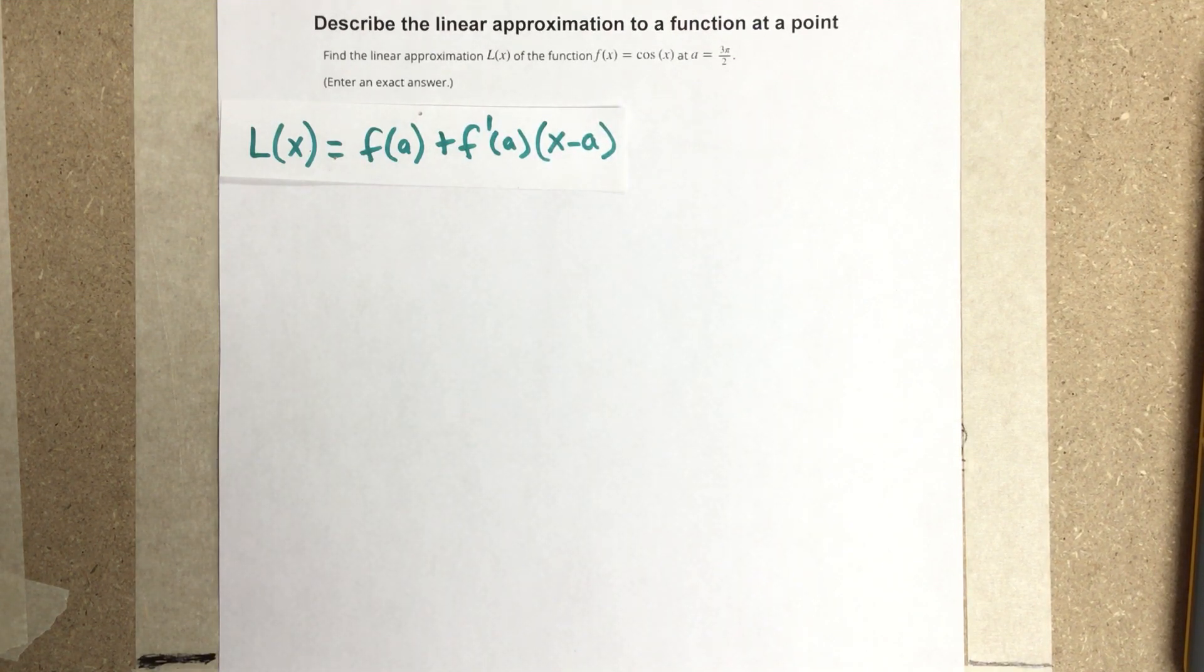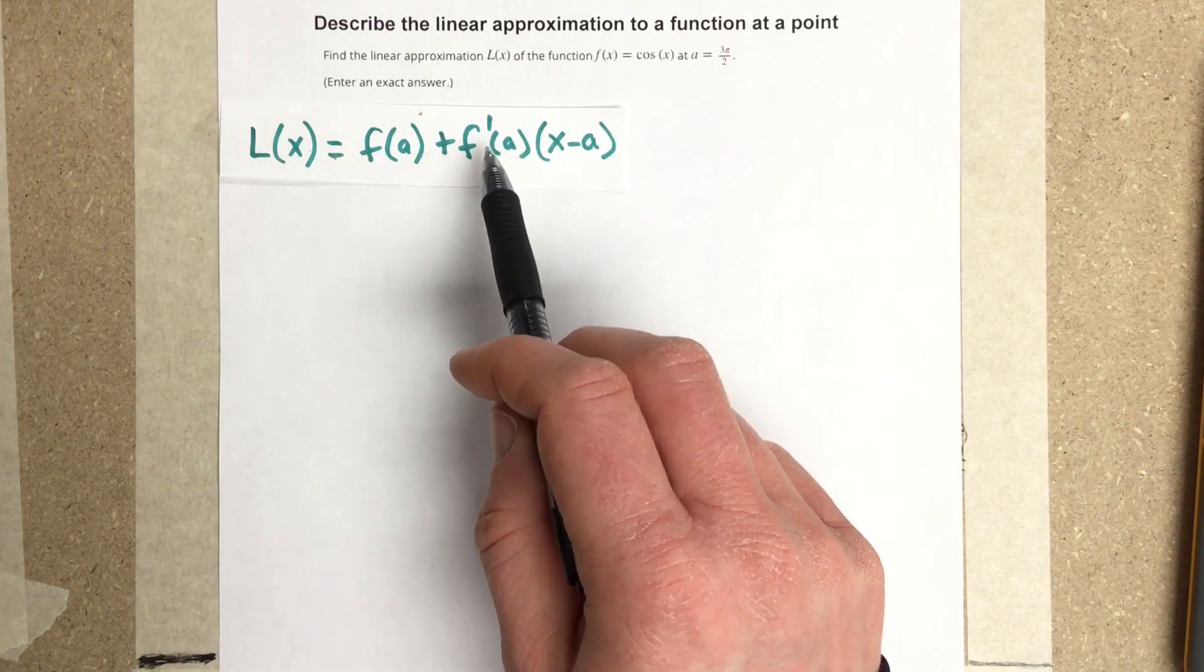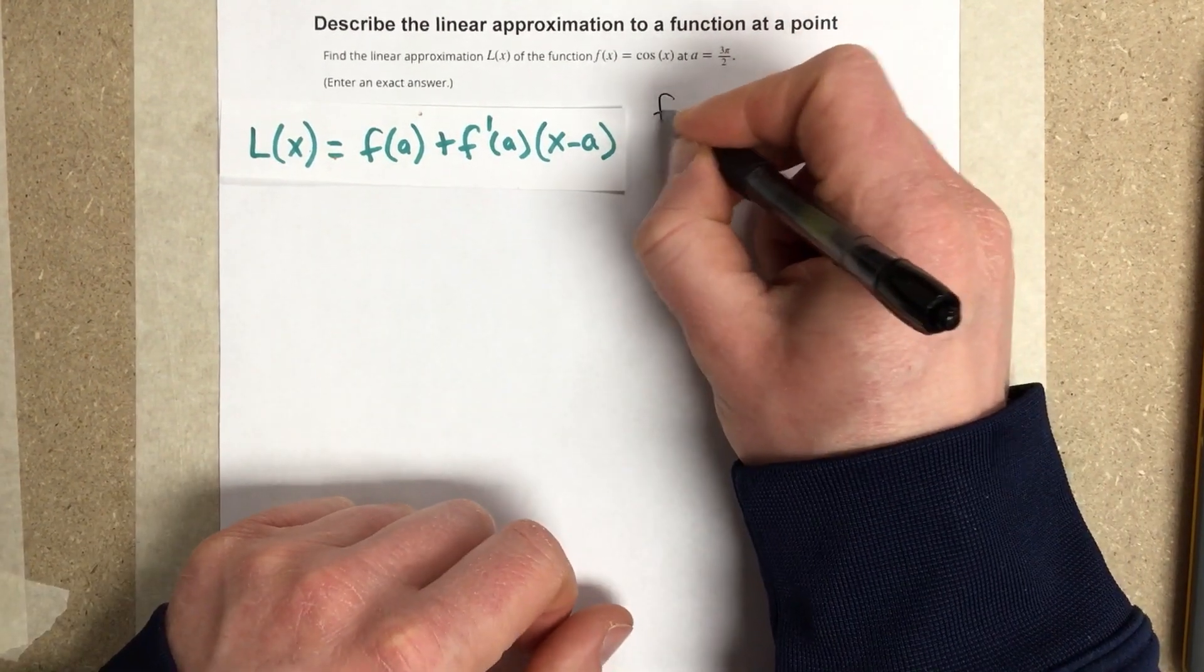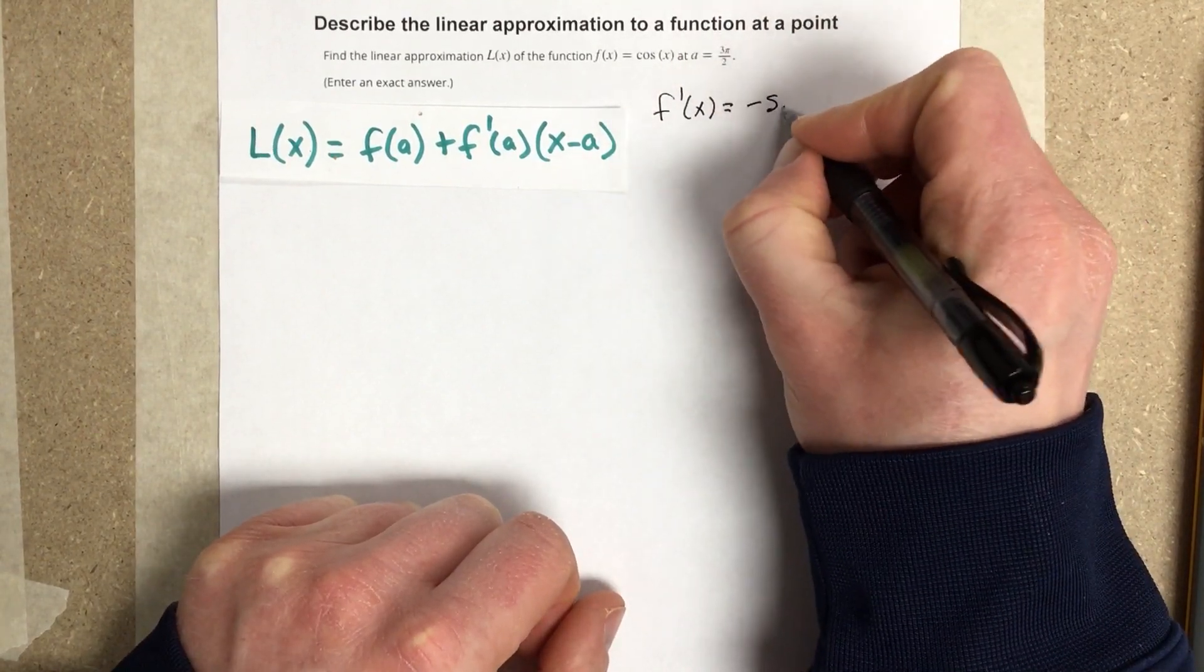So the first thing I'm going to do is notice that my linear approximation function includes a derivative, so I need to take the derivative of cosine. So f'(x) is equal to the derivative of cosine, which would be -sin(x).